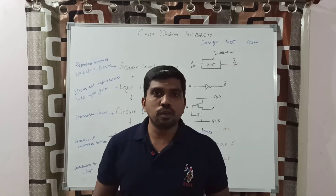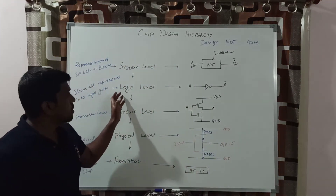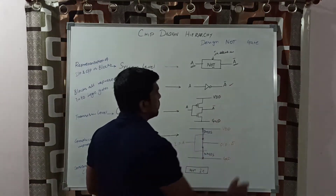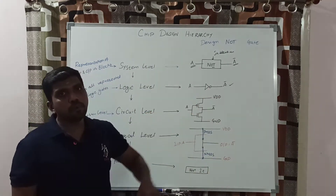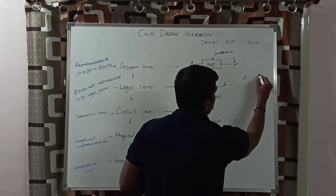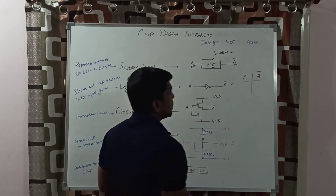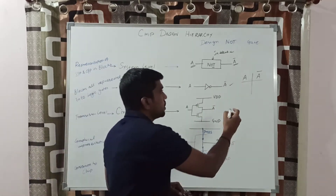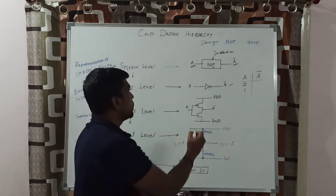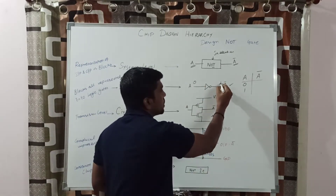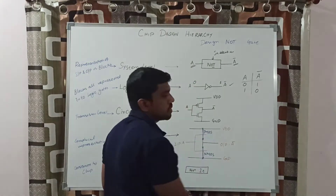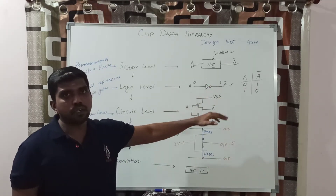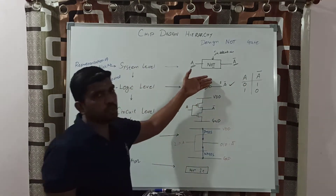The next level is the logic level. In this logic level, the block diagram is converted into a logic circuit. Here A is the input and A-bar is the output. A is a single variable, it produces two input combinations: zero and one. If you apply zero, the result is one. If you apply one, the result is zero. Based on this truth table, you verify whether the logical circuit produces a valid output.